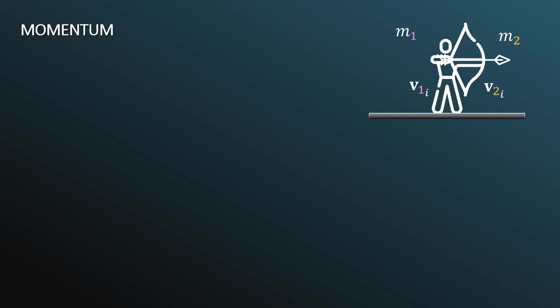First, we denote our values by symbols. The masses are M1 and M2, and the velocities are V1 and V2, with the additional subscript indicating initials. This is the initial state of the archer-arrow system. The archer applies some force, which I'll call F(1,2), indicating the force of object 1 on object 2. So the archer is applying some force to the arrow to the right, which is what propels the arrow to the right.